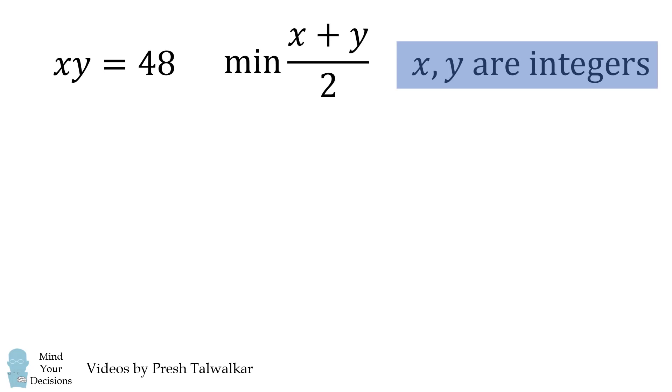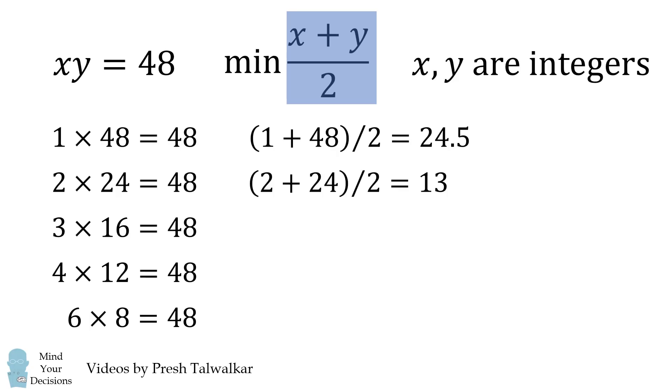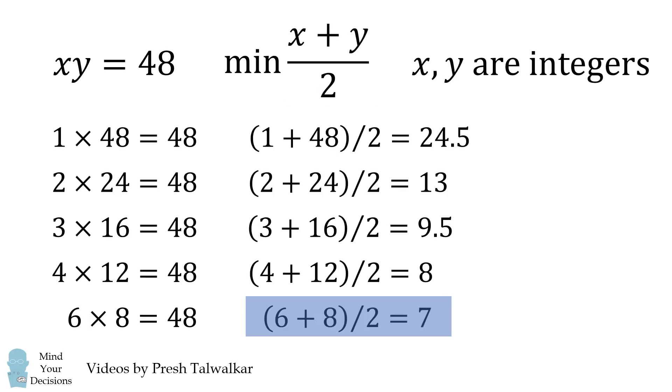Recall that X and Y are integers. We have X times Y is equal to 48. So we'll consider the integer factors of 48. So we'll write out the possibilities for the factors of 48. We then calculate the average values. It would appear the lowest average value is 7.